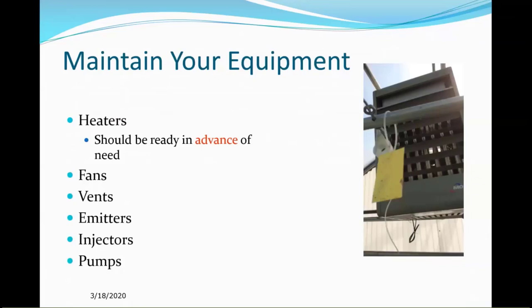Regarding equipment: in addition to making sure heaters work before you need them, make sure they don't have exhaust gases leaking into the greenhouse. Tomatoes need the heat and they love carbon dioxide, but any traces of carbon monoxide or ethylene are devastating — tomatoes are ultra sensitive to those. When you walk the house, make sure your emitters are working. If you see a wilted plant, stop and check — it could just be a clogged emitter you can fix in seconds.